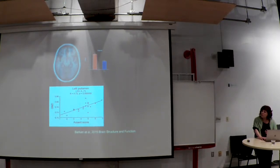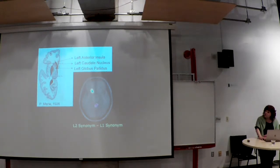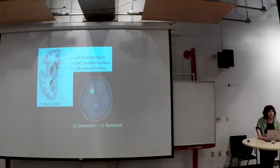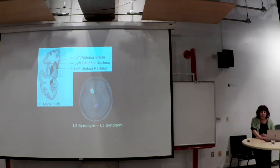In late bilinguals, greater gray matter density correlates with better accent — again suggesting structural differences between simultaneous and sequential bilinguals, early and late, and some individual differences where better performance results in greater gray matter density. When people produce speech in their second language — generating synonyms in their second language compared to their first — they activate the basal ganglia region more when articulating in their non-native language, showing differences in brain areas for speech articulation and word retrieval.